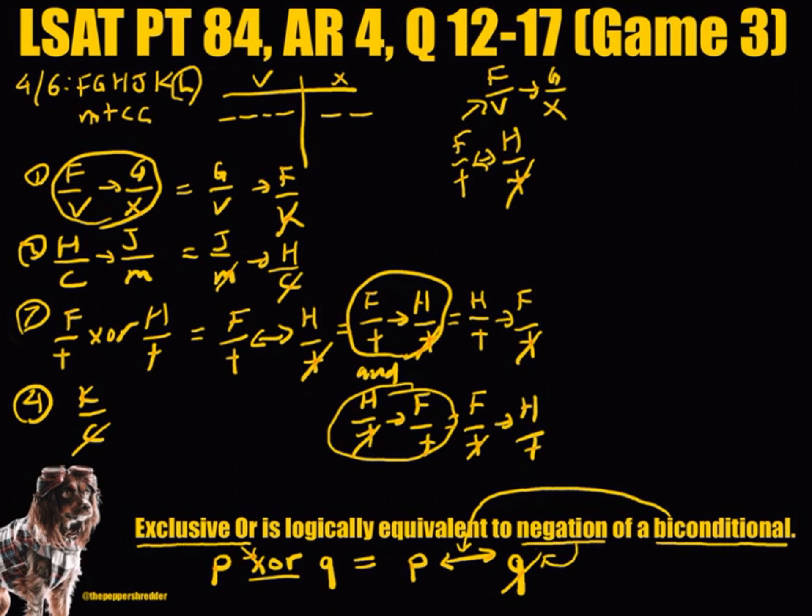We also know from the game type being an in and out game, that if H is out, then H cannot be grouped with T. Looking at this logic chain, if H is out, we can see that the game is restrictive.